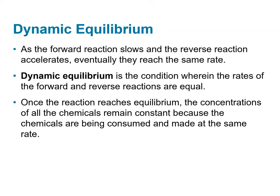Dynamic equilibrium is the condition wherein the rates of forward and reverse reactions are equal. It's important to remember that it's dynamic because we continuously have reaction taking place — it's just that the concentrations aren't changing because the forward and reverse rates are the same. It doesn't mean that chemically everything is static, just the concentrations. And it doesn't mean we can't change the concentrations by modifying the system or reaction conditions to shift equilibrium.